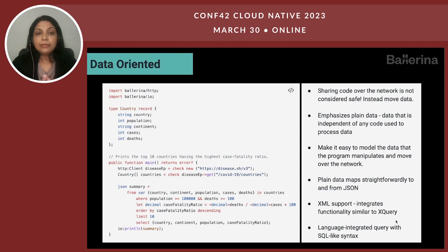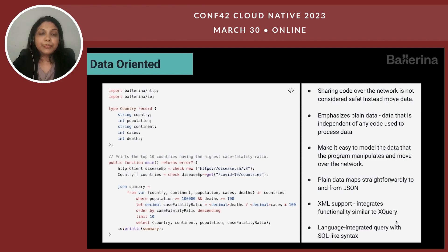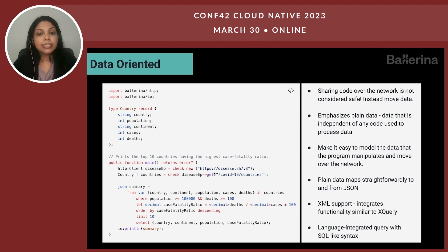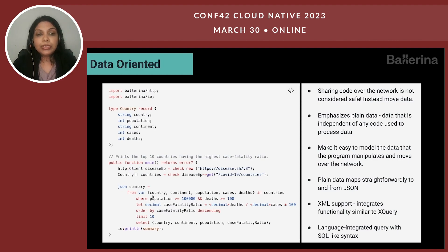In Ballerina, we have support for different protocols and data types. JSON and XML are primitive types in the language, just like string, int, and float in other languages. Ballerina also provides query-like syntax — you can see SQL-like syntax used to process data coming from the wire. The data received via the wire is assigned to an in-memory type defined at the application level, and then processed using that query-like syntax. This makes filtering and processing data very easy without writing complex logic.